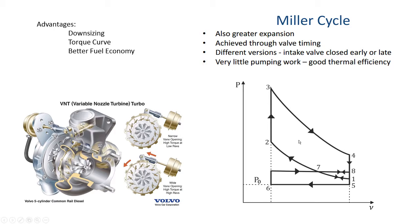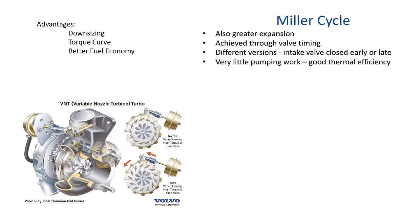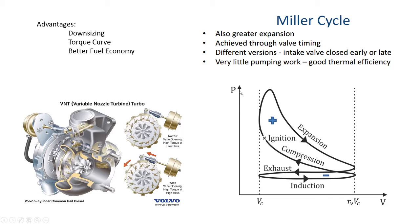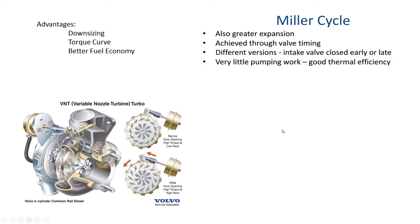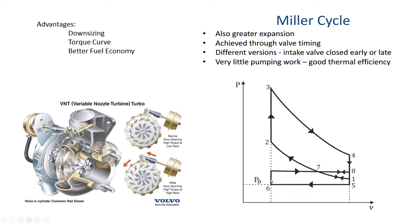However, it's not the same with the naturally aspirated engine. The diagram here shows you the difference. For a naturally aspirated engine, the intake pressure is lower than the exhaust pressure, because the exhaust pressure is coming off from the expansion stage. So we lose quite an amount of energy — probably about 5% of the thermal efficiency. That's the real difference of how a turbocharged engine could help the fuel economy.